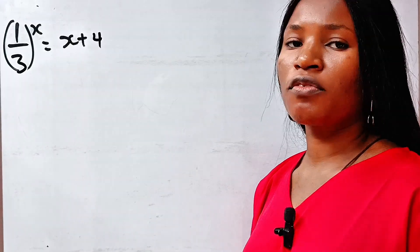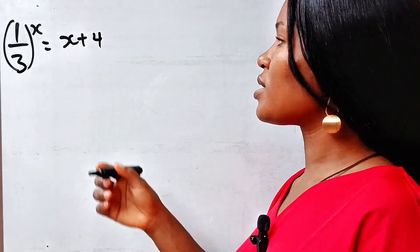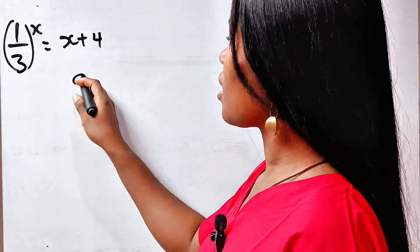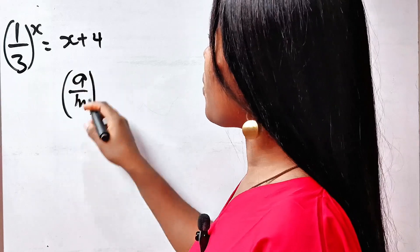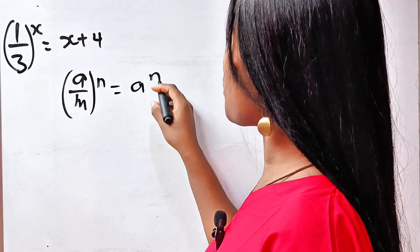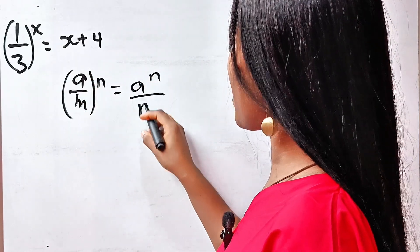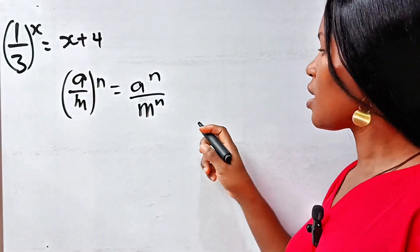Let's solve for the value of x. First, note that (a/m) raised to the power of n is equal to a to the power of n divided by m to the power of n.